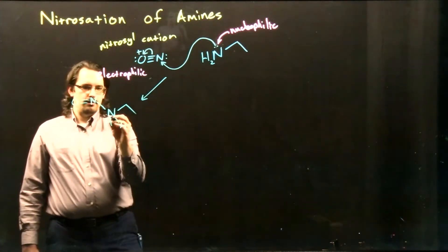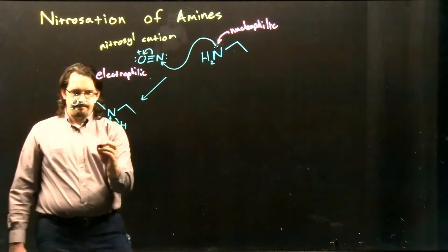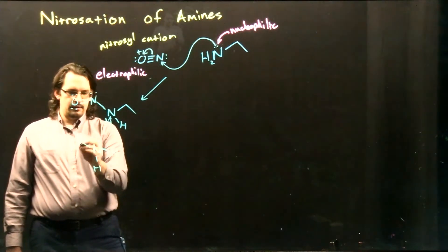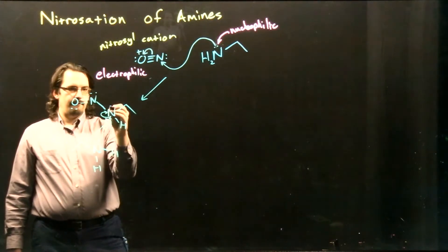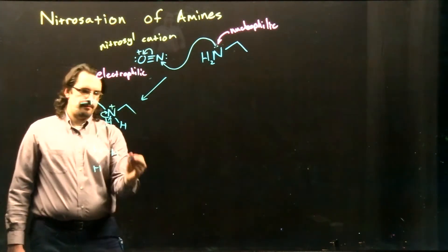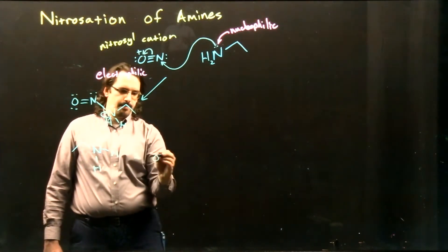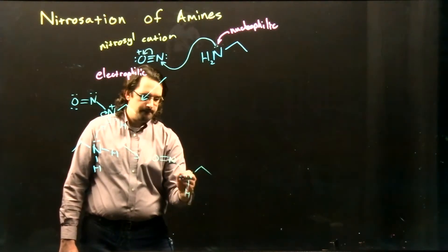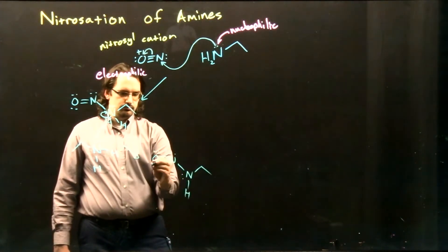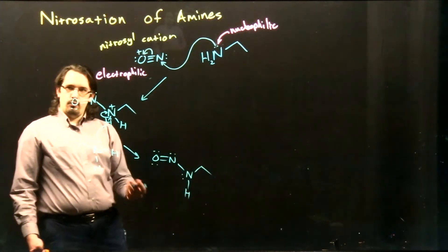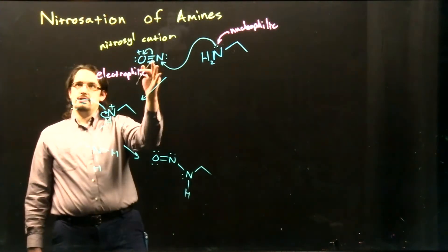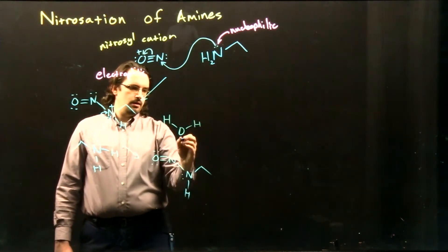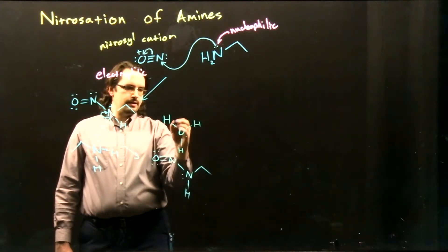From here, we can deprotonate this, using another unit of our amine as a weak base. Now we are still in acidic conditions, which is what we used to generate our nitrosyl cation. In acidic conditions, our oxygens often tend to get protonated.